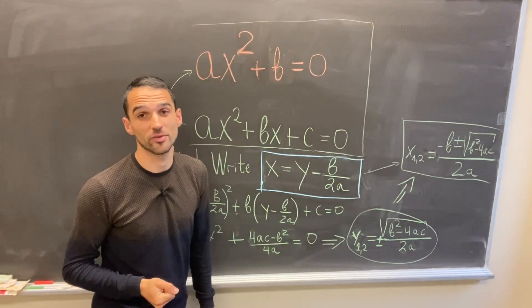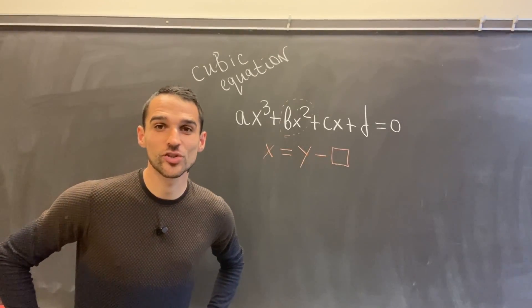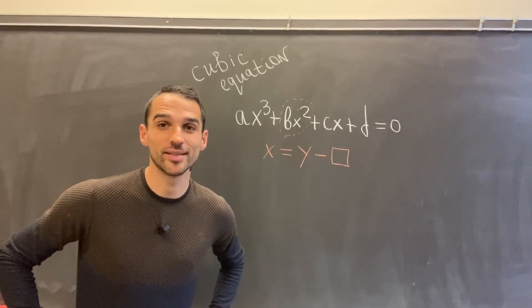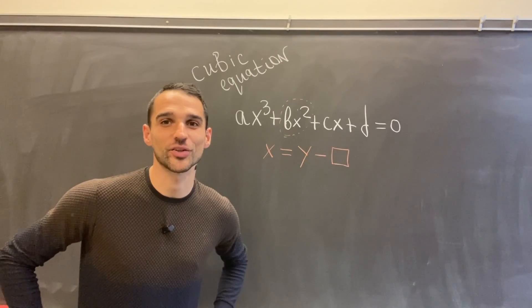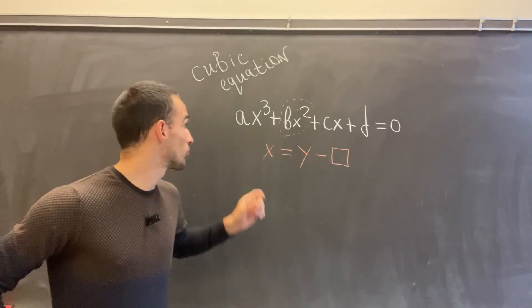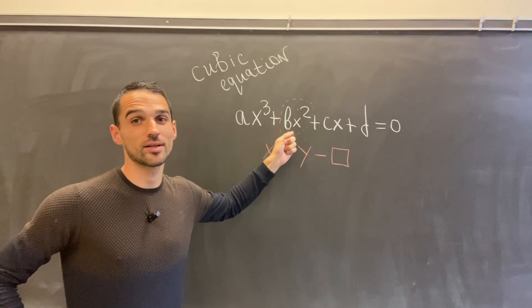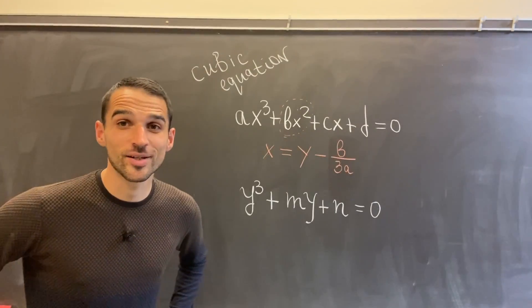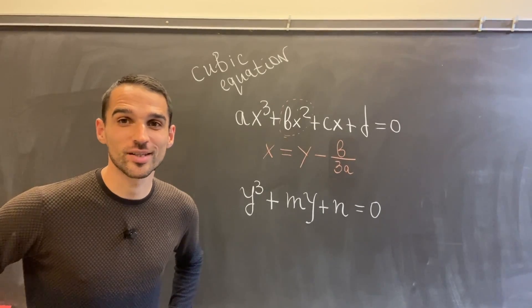We can go further and even solve cubic equations using the same initial idea. Let me write instead of x: y minus another number, so that this previous term—in our case bx²—is going to get cancelled. As in the quadratic case, I can easily figure out what is the right number to subtract here from y.